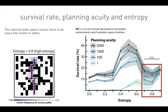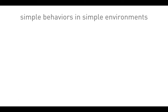At high entropy, the reduced state space causes there to be only a few routes to safety. Here's a heat map for one of the high-entropy worlds — it's essentially just a corridor. Success becomes dependent on predator and environment initialization. We get essentially simple behaviors in simple environments. We've applied a commonly used measure of network complexity to our grid worlds. That measure gives basically the same complexity level for the low-entropy world as for the high-entropy world, and a much higher level for the mid-range entropy condition.